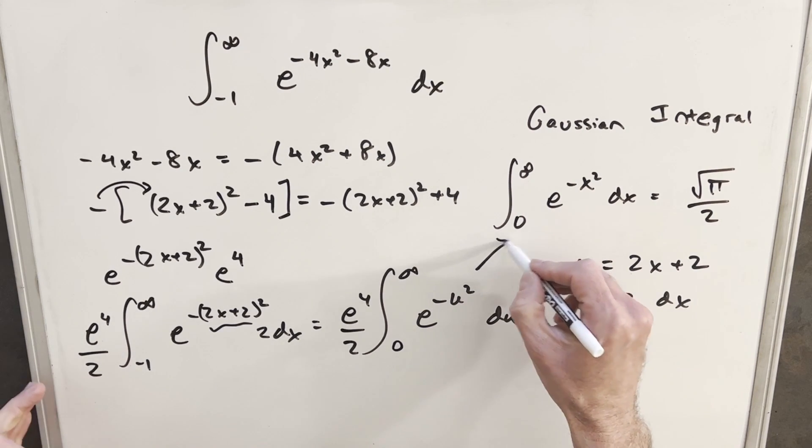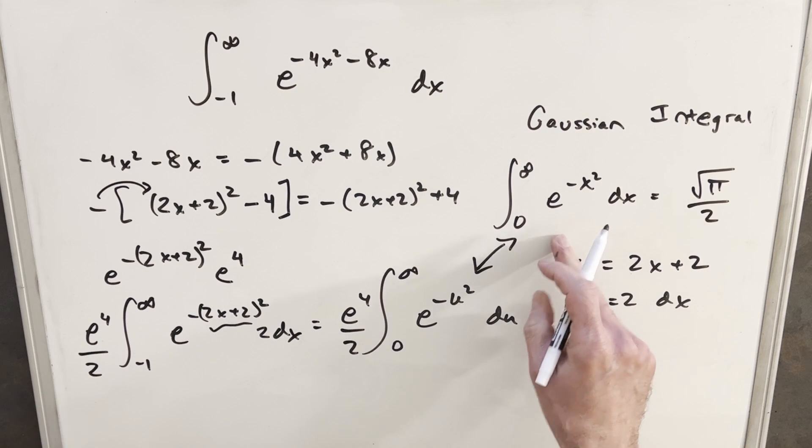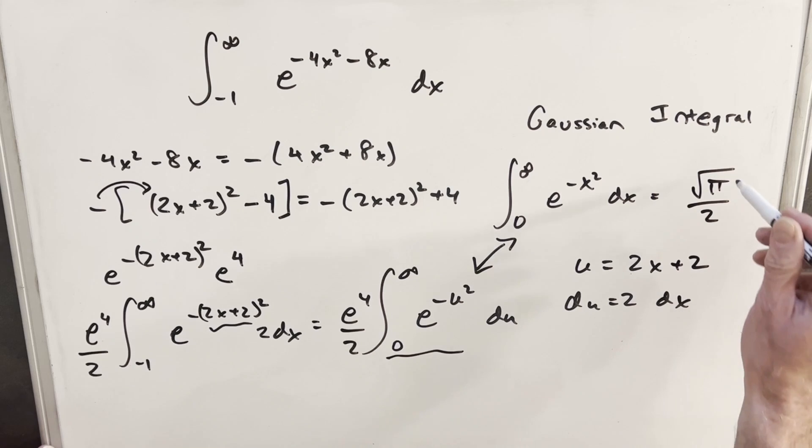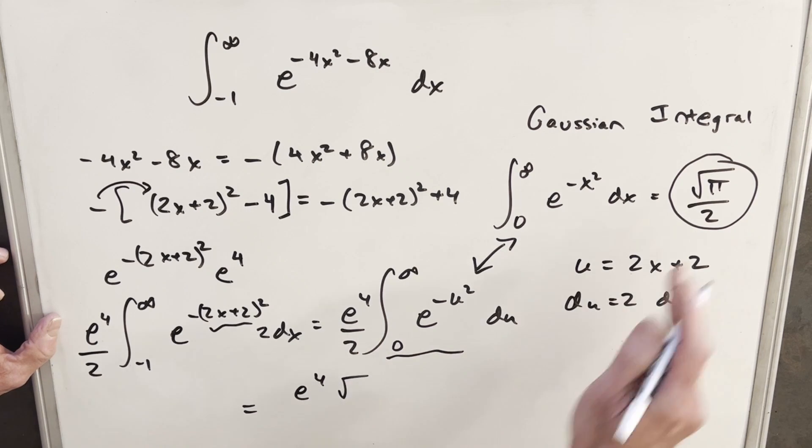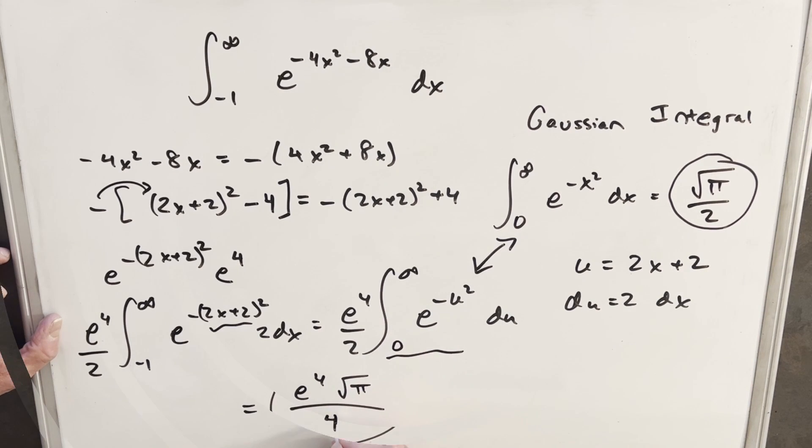And what you'll notice now is we have a perfect match. The variable name doesn't matter on a definite integral. So this piece right here is going to be exactly this value. So we're really ready to finish this off. We're going to have, for our final solution, we're going to have this e to the 4th, we'll have our square root of pi. And then multiplying this 2 and this 2, we're going to have a 4 in the denominator.